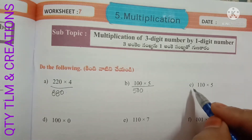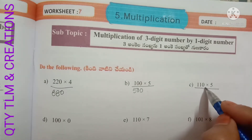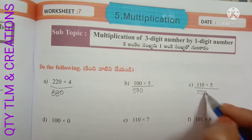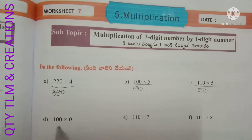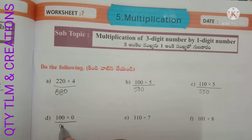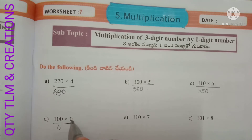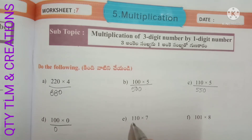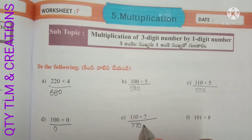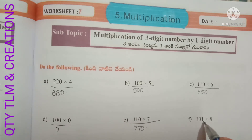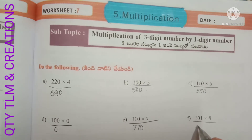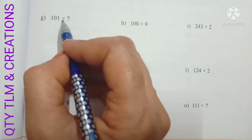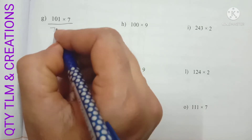Next C: 110 into 5, we will get 550. Next D: 100 into 0 — when we multiply any number with 0, we will always get 0. Next E: 110 into 7, we will get 770. Next F: 101 into 8, we will get 808. Next G: 101 into 7, we will get 707.